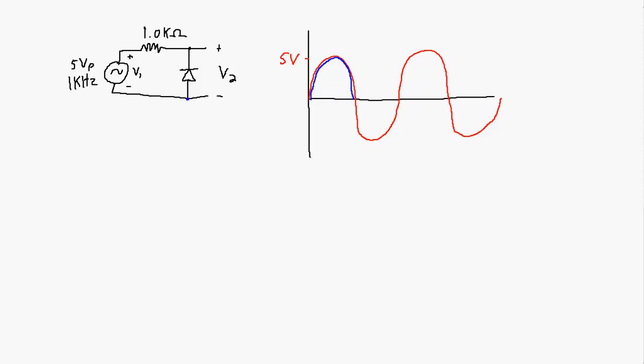On the negative half of the cycle, this voltage needs to be about 0.7 volts higher than the voltage on the other side in order for the diode to become forward biased. That won't happen until the input voltage gets down to about minus 0.7 volts. At that point it's going to be a constant 0.7 volts across the diode. When the input rises again above minus 0.7 volts, the diode becomes reverse biased and the output follows the input, basically cutting off most of the negative part of the cycle.